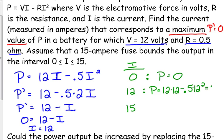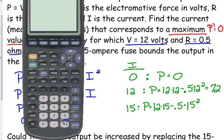And when it's 15, we have P equals 12 times 15 minus 0.5 times 15 squared. Definitely doing my calculator on this one. 12 times 15 minus 0.5 times 15 squared—67.5.